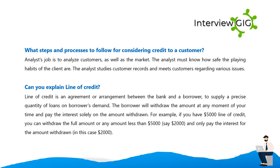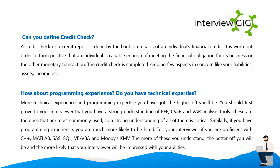Can you explain line of credit? A line of credit is an agreement or arrangement between a bank and a borrower to supply a precise quantity of loans on the borrower's demand. The borrower can withdraw the amount at any time and pay interest solely on the amount withdrawn. For example, if you have a $5,000 line of credit, you can withdraw the full amount or any lesser amount — say $2,000 — and only pay interest on the $2,000 withdrawn.